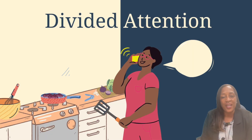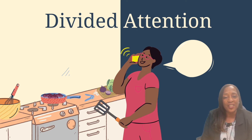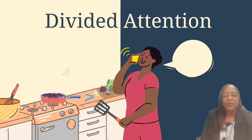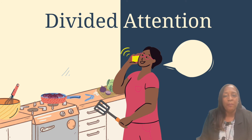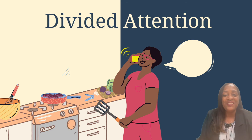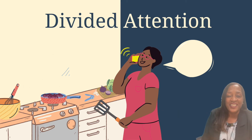And then lastly is divided attention — doing two things at once. For example, having a conversation while you are typing, or reading a book while you are petting the dog. That would be divided attention.